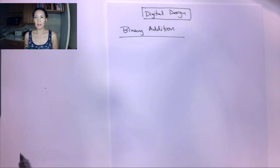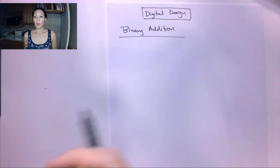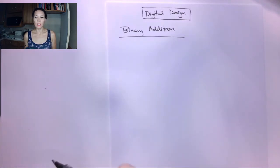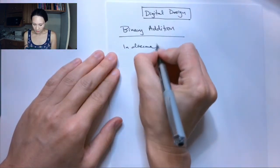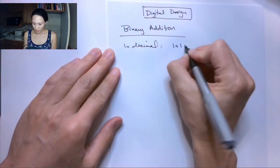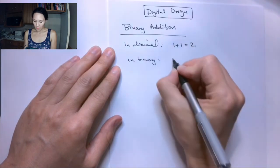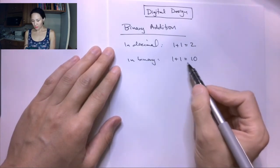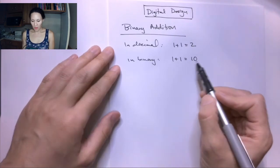Addition is addition no matter what number system you're working in. But what makes this a little less comfortable is that non-decimal systems are non-native to us, so we have an extra layer of conversion in our minds. In decimal, we know that 1 plus 1 is equal to 2. But in binary, 1 plus 1 is equal to 1, 0. We know by conversion that this is 2, but we're just not used to seeing 1 plus 1 not equal to the numeral 2.